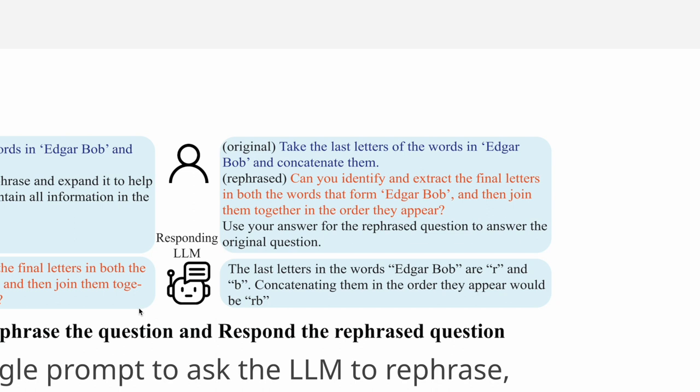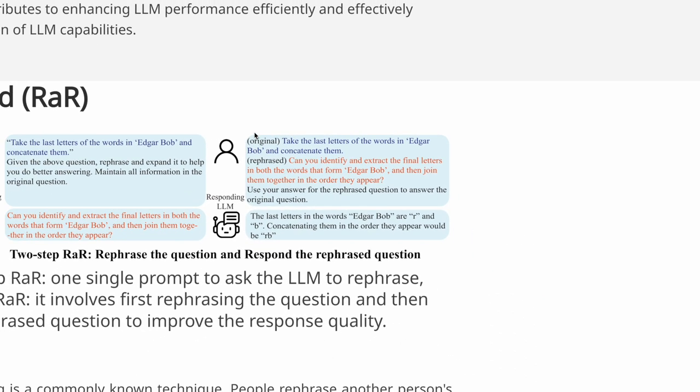So the answers that you extract either for the original or rephrased should be the same. So with that understanding, it tries to answer it in a step-by-step fashion where it extracts R to be one of the words, B to be one of the words, and then concatenating both of them would become RB. So that's the idea of two-step rephrase and response strategy.